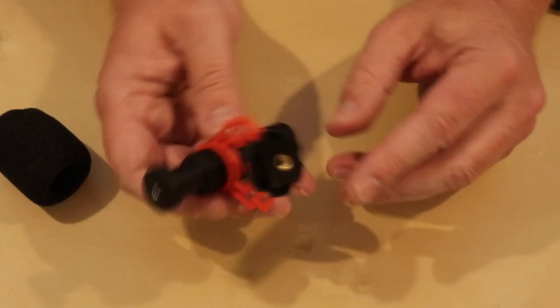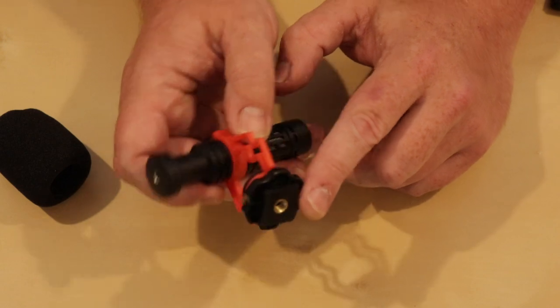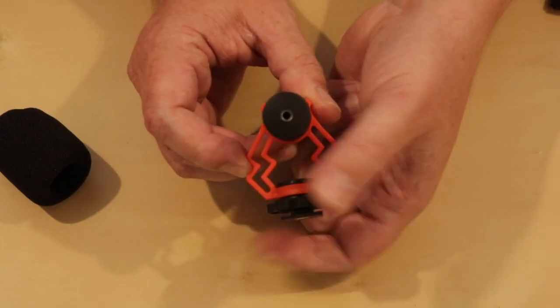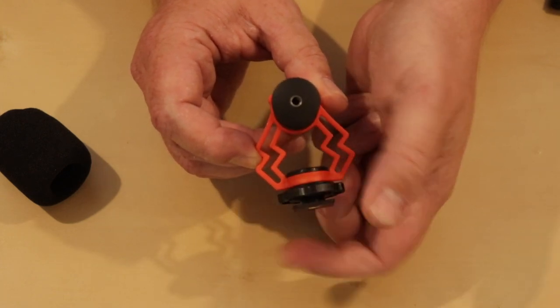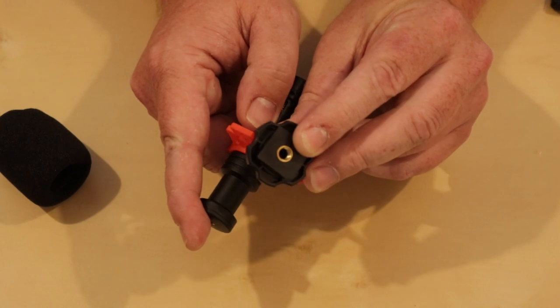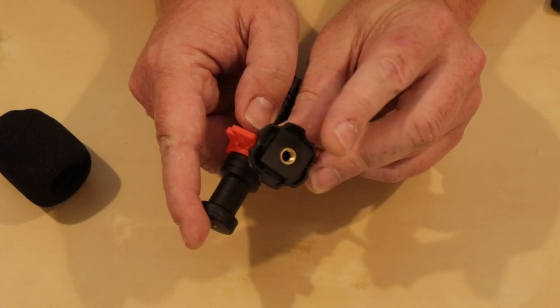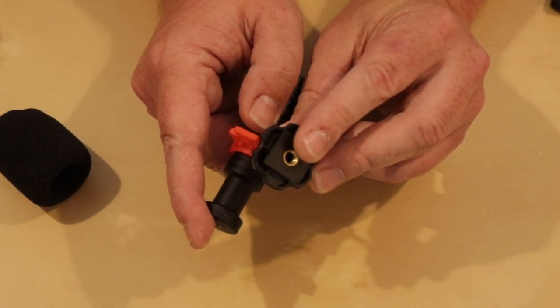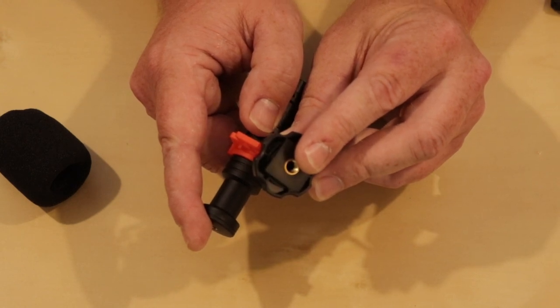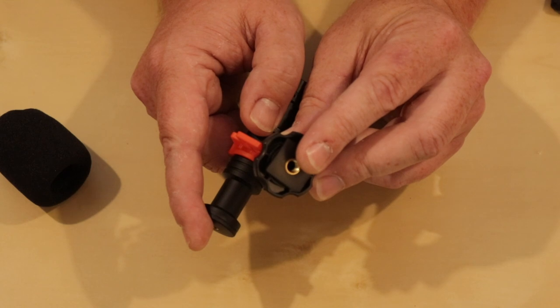On the bottom we have the cold shoe adapter, so that can slide onto the top of your camera, and then you just turn the wheel to tighten that down. Another added bonus is there is a screw thread on the bottom, so if you wish to attach this to another tripod, whether it be a small desktop tripod or even on the end of a boom pole, you can do that if you wish.